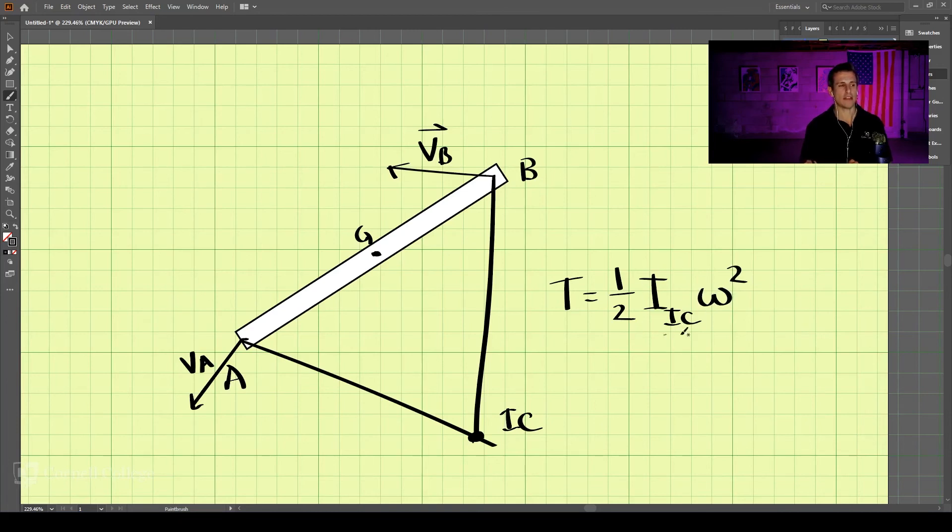So how do we get this I value? Well, the I value, remember we'll use the parallel axis theorem. I is equal to the moment of inertia about the center of gravity plus md². And if we consider this a slender rod, that is 1/12 ml² plus md², where d is the distance from the center of gravity to the point we're rotating about. So this is d.